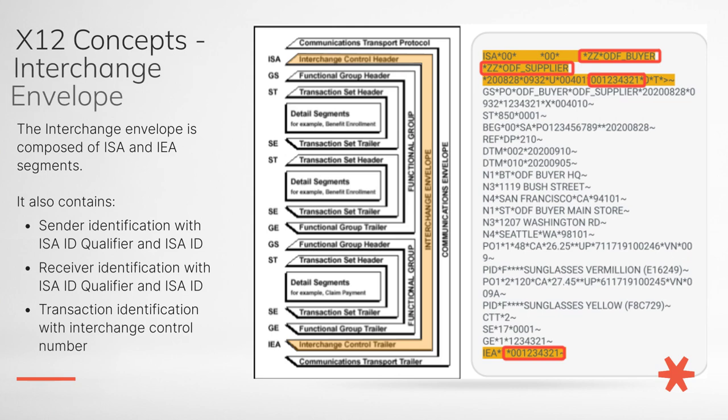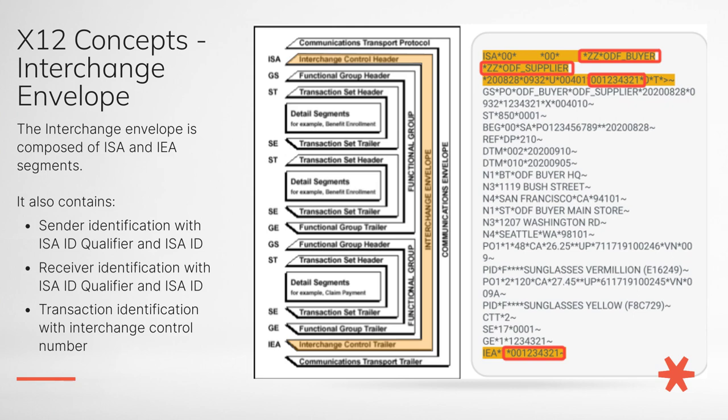The interchange envelope is composed of ISA header and IEA trailer segments. Between these, you will find sender identification with an ISA ID qualifier and ISA ID. In this example, the qualifier is ZZ and the sender is ODF Buyer. There is also receiver identification — the qualifier is ZZ and the receiver is ODF Supplier. Finally, there is transaction identification with an interchange control number, which in this example starts with 001.